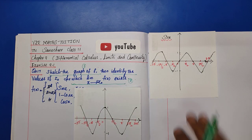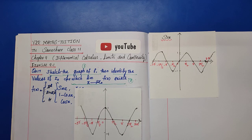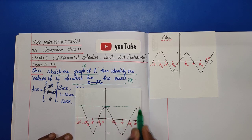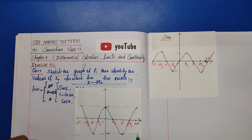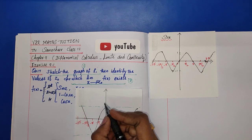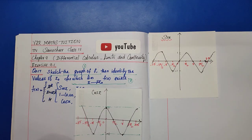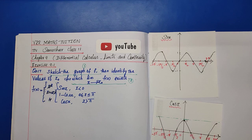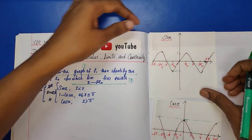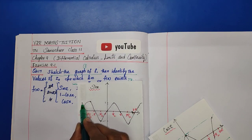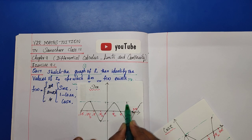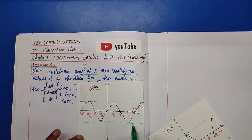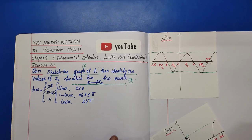The cos x graph and the sin x graph both have maximum value plus 1 and minimum value minus 1. The cos x graph starts at plus 1 at x = 0 and the sin x graph starts at 0. This is the cos x graph and this is the sin x graph.